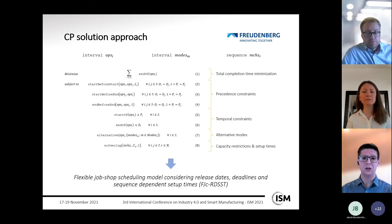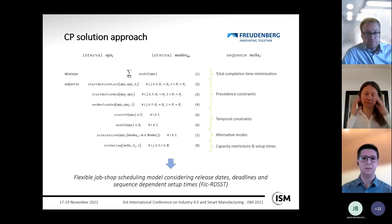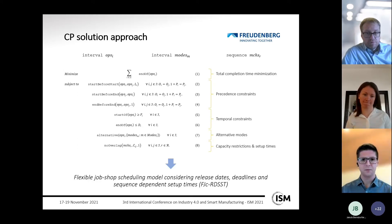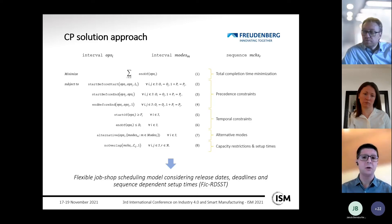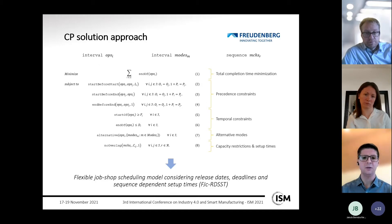Condition eight provides the capacity restriction, meaning each resource is only capable of carrying out one activity at a time. Additionally, sequence-dependent setup times are incorporated into the model with condition eight. This complete model formulation, developed during this work, is named the flexible job shop scheduling model considering release dates, deadlines, and sequence-dependent setup times.